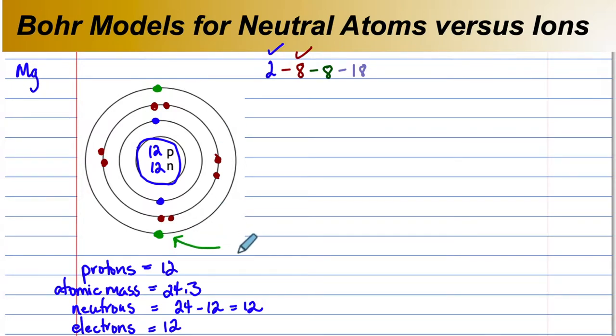The electrons on the outside shell are called valence electrons. The valence electrons determine the physical and chemical properties of an element.